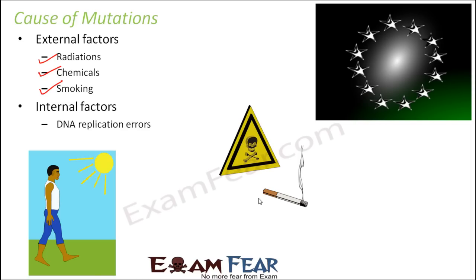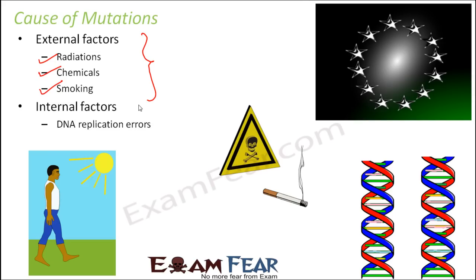When the DNA sequence changes, different proteins can be produced, and this can be extremely harmful. This kind of internal error is actually a natural process — it happens whenever the DNA fails to copy correctly. In the case of external factors, exposure to chemicals or radiations can break down or damage the DNA. The cell tries to repair it, but the repair is not always done perfectly, and that loophole is seen as a mutation — a change in the genetic material.